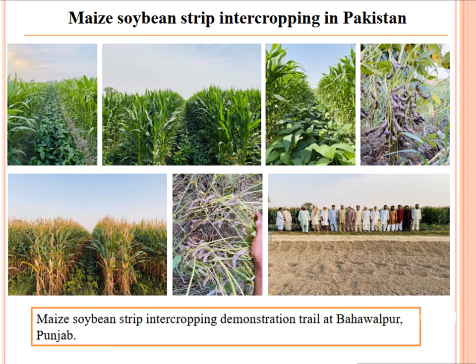After the success in China, Professor Wenning Yang sent his student to Pakistan for demonstration of this technology. Several demonstration trials were conducted in Punjab, Sindh, and other provinces of Pakistan. Many farmers wanted to adopt this system because it significantly improved the final yield of both maize and soybean. This is especially important because Pakistan currently suffers from having to import soybean from other countries.